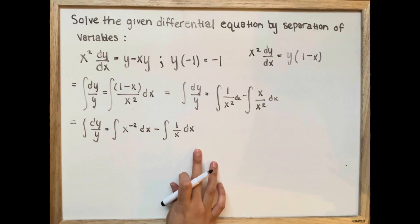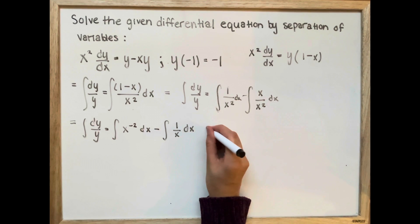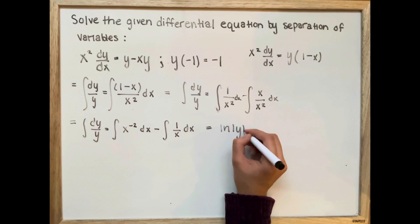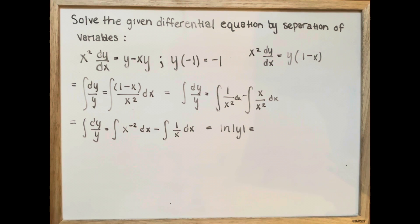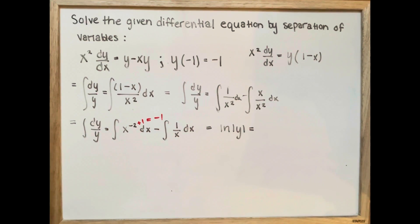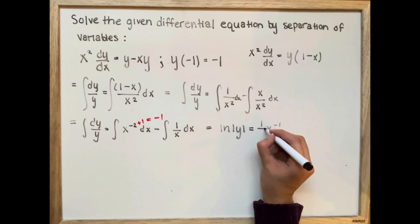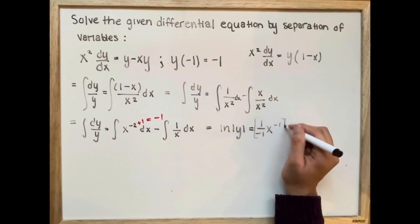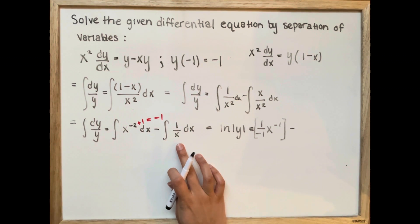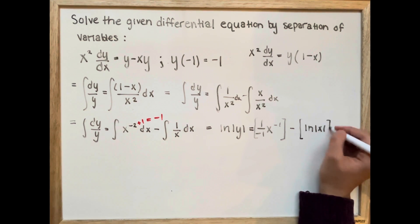Now that we have simple integrals, we're going to start to solve them. The left side — the integral of 1 over y times dy — is just ln of the absolute value of y. For the right side, since we have an exponent of negative 2, we add 1, giving a new exponent of negative 1. So we get x to the negative 1 divided by negative 1, minus the integral of 1 over x dx. That integral is just ln of absolute value x, plus c.